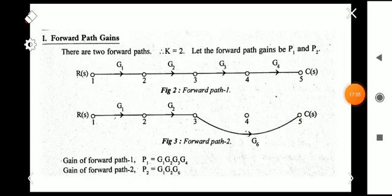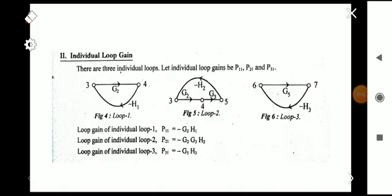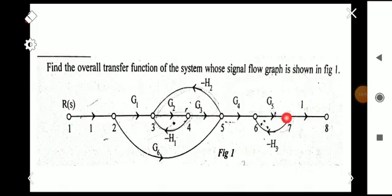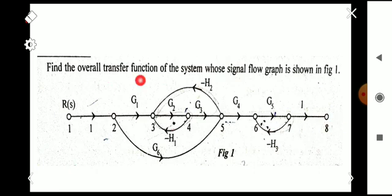I hope that's very clear. Now here is an assignment: note down the next figure and find the overall transfer function of the system. Copy the signal flow graph carefully, mark each gain correctly — including −h2, −h1 — and mark all nodes correctly. Submit your assignment.